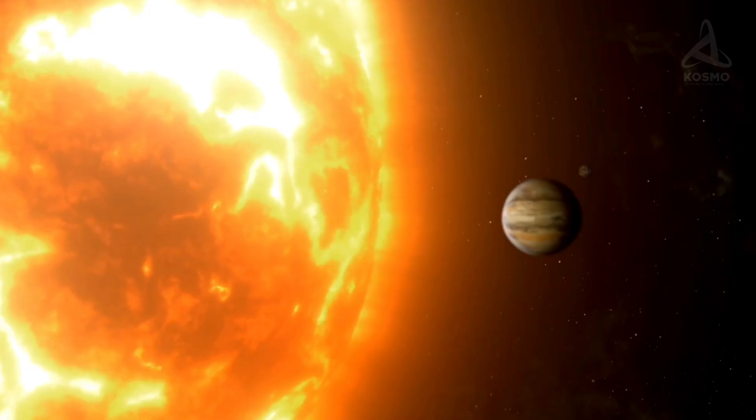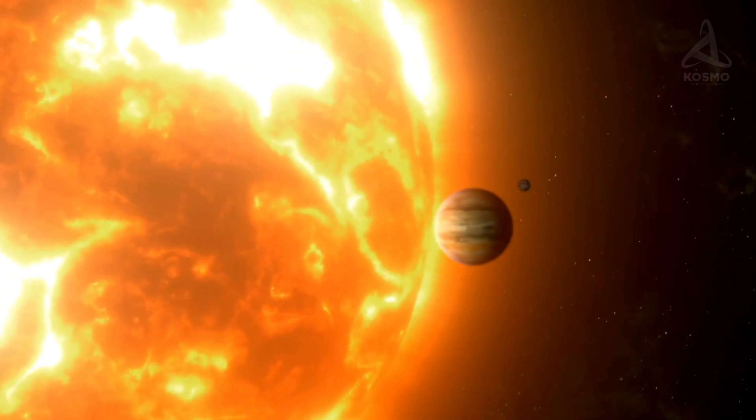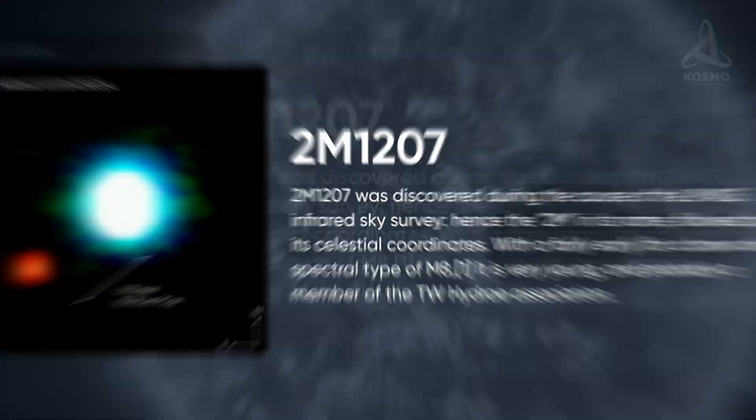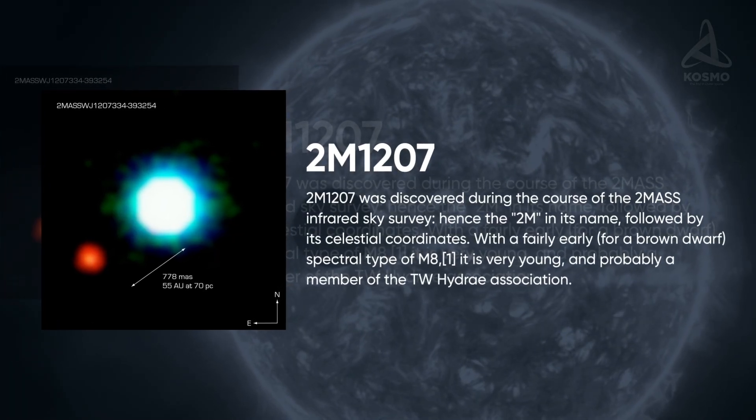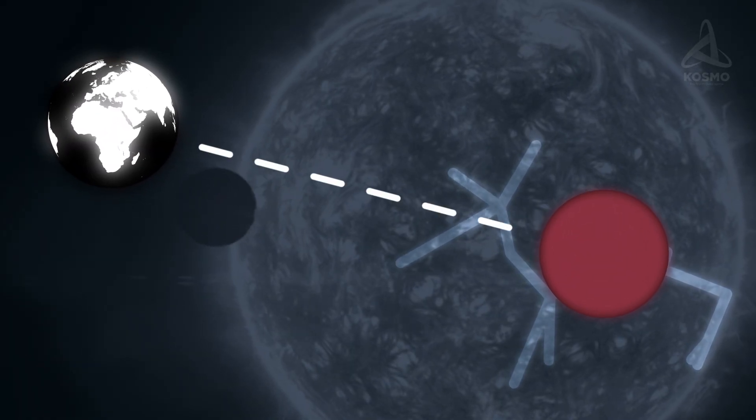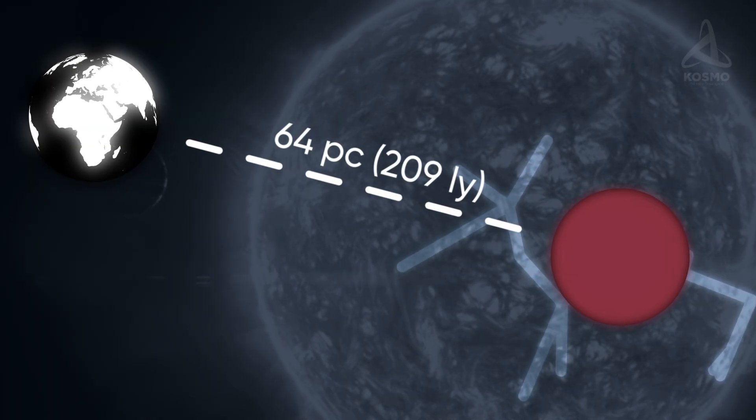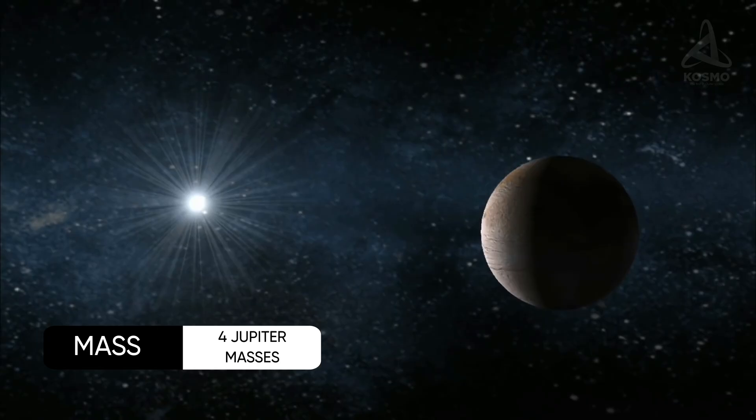There may be planets orbiting brown dwarfs. The first satellite of this kind was detected in 2004. It orbits 2M1207, a comparatively warm brown dwarf in the constellation Centauri, which is 64 parsecs or 209 light years away from the Earth. This planet is rather large. Its mass is four times that of Jupiter.